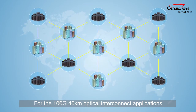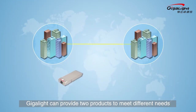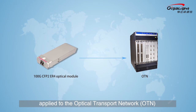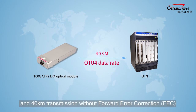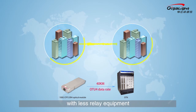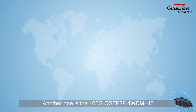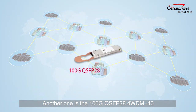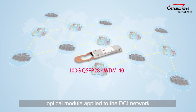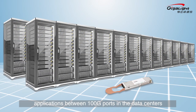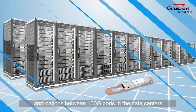For 100G 40-kilometer optical interconnect applications, Gigalite can provide two products to meet different needs. One is the 100G CFP2 ER4 optical module applied to the optical transport network, supporting OTU4 data rate and 40-kilometer transmission without forward error correction, simplifying the MAN transmission network with less relay equipment to reduce system delay and operation maintenance cost. The other is the 100G QSFP28 4WDM40 optical module applied to the DCI network, a convenient choice for long-distance interconnection between 100G ports in data centers.